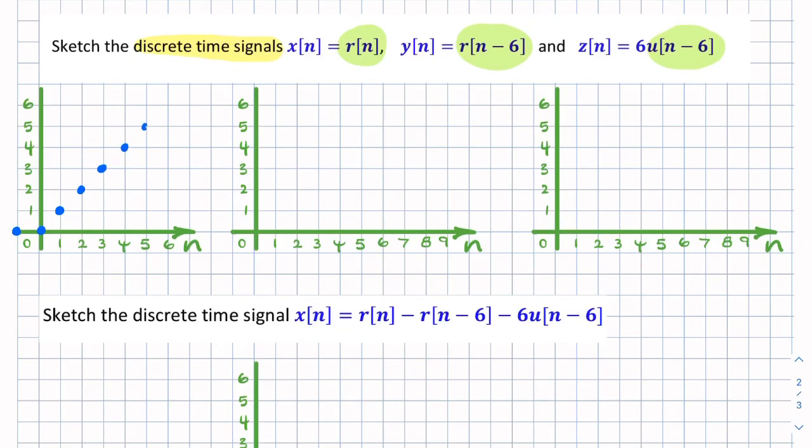And then it would increase linearly, but only at discrete instances of time. So it's only defined for n equals zero, n equals one, n equals two, etc. It's zero or undefined for values of n which are not integers.